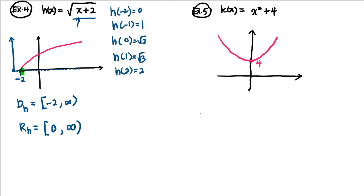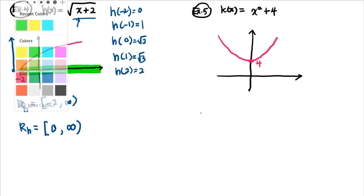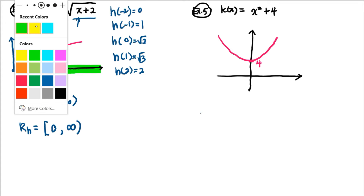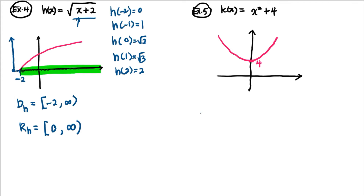The range of h is [0, ∞). To find the domain, look at coverage along the x-axis; to find the range, look at coverage along the y-axis. The graph of h goes upward from the y-axis value of 0.